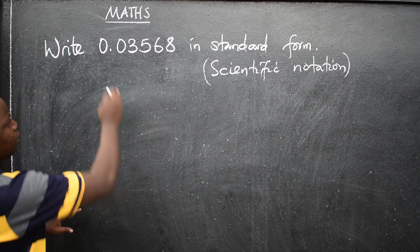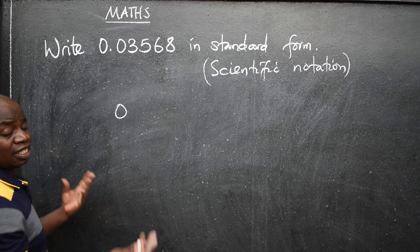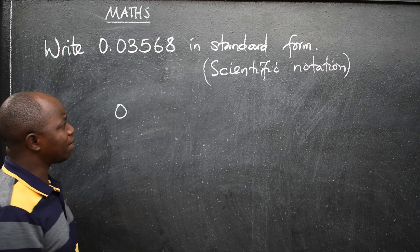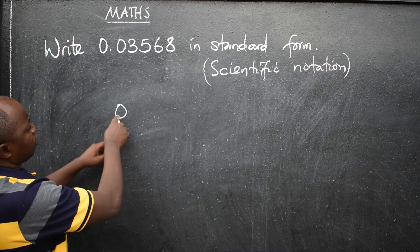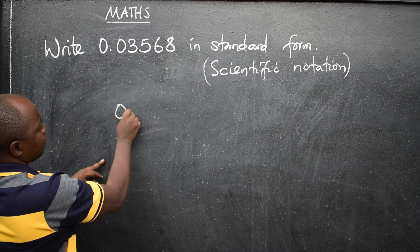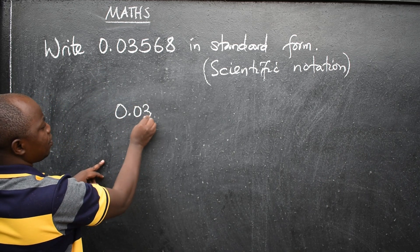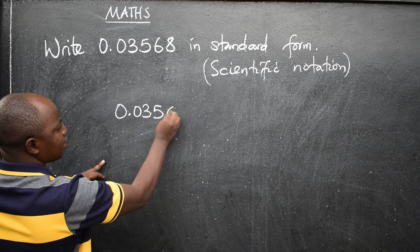How do you go about it? You get the number, it can be a decimal number, it can be a whole number, but you have to be very careful and listen to what I'm going to say. So this one will be 0.03568.